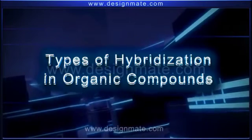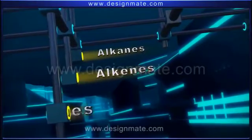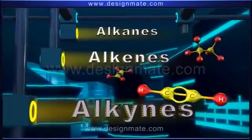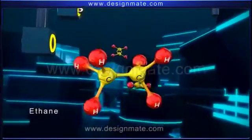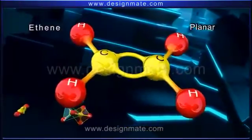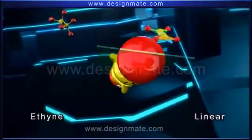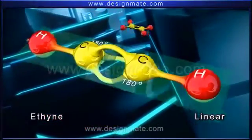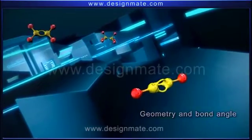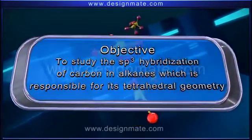Types of hybridization in organic compounds: hydrocarbons are classified as alkanes, alkenes, and alkynes. Consider ethane, ethene, and ethyne as their respective examples. Ethane is ditetrahedral with a bond angle of 109°28', ethene is planar with 120°, and ethyne is linear with 180°. All three differ in geometry and bond angle due to differences in the state of hybridization of the carbon atom.